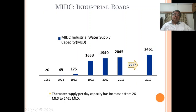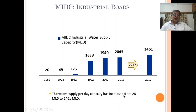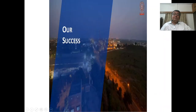Industrial water supply in million liters per day: in 1962 it was 26 MLD; in 1970 it was 49 MLD; in 1980 it was 175 MLD; and it kept increasing to 653 MLD, then 1,940 MLD, then 2,042 MLD, and finally 2,461 MLD by the year 2017. The water supply capacity has increased from 26 MLD to 2,461 MLD.